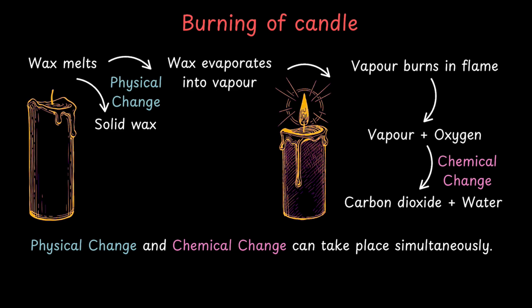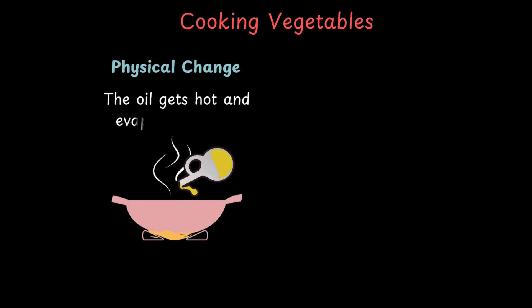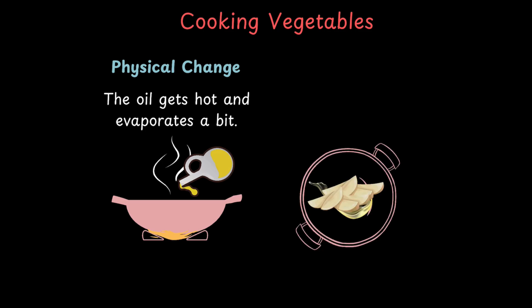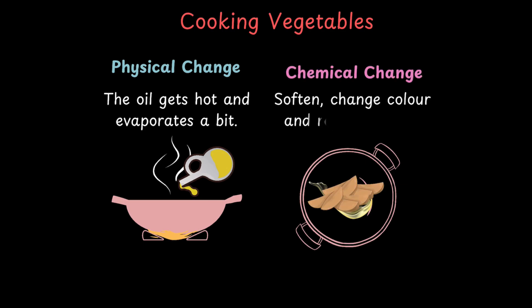And this isn't just a candle-only thing. We see it everywhere — in our kitchens, during Diwali, even while making tea. Say you're cooking vegetables. First, you heat some oil. The oil gets hot and maybe even evaporates a bit — that's a physical change. Then you add the veggies. As they cook, they soften, change colour, release aroma and form new flavours. That's where chemical changes kick in.